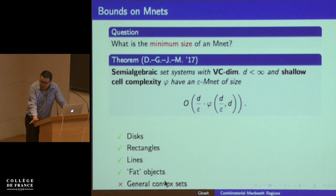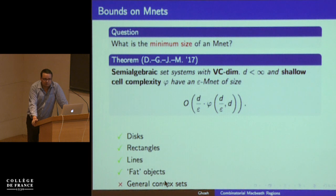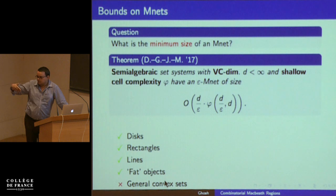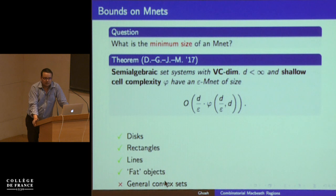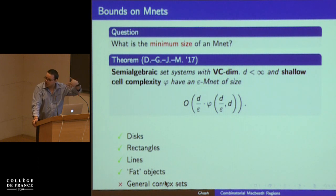What this result directly gives you: M-nets for disks, rectangles, lines, and semi-algebraic objects — but it doesn't give results for general convex sets. If the family of objects I'm intersecting with is general convex sets, I don't get a result. Why? Because the family itself doesn't have bounded complexity — a convex set can have an arbitrary number of vertices on the boundary, an arbitrary number of faces.